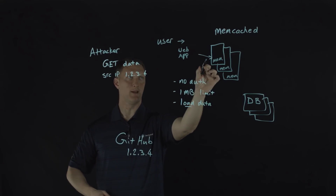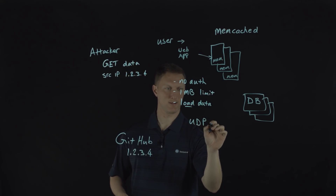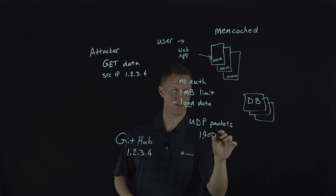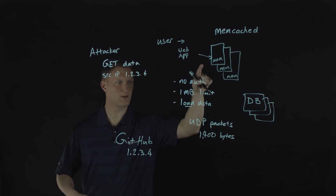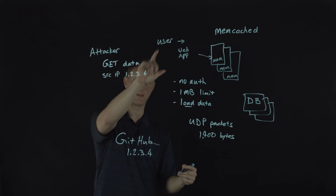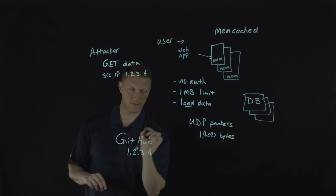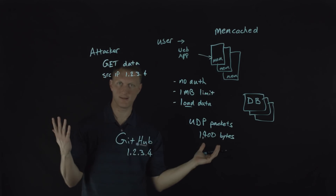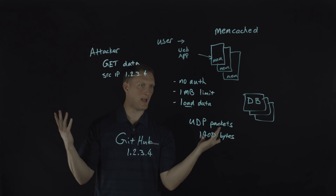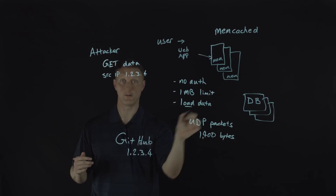Whenever the GET request is sent, the Memcached server sends a stream of UDP packets — 1,400 bytes in size — streaming those packets to the recipient of the GET request. If you spoof the source IP address as the victim's IP, then the Memcached system sends all of those packets to the victim. GitHub is sitting there having a great day, and then all of a sudden it gets flooded with UDP packets it never even asked for.